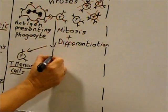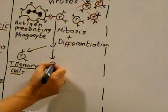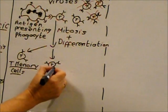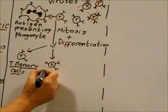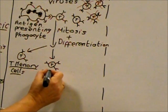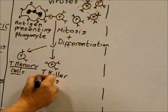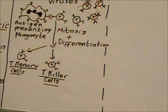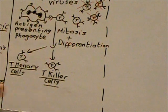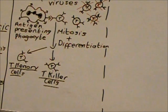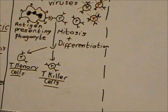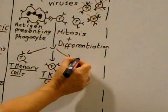A second type of T lymphocyte produced by differentiation is T killer cells, also called cytotoxic T cells. These cells produce proteins that punch holes in cell membranes, killing abnormal and infected cells.